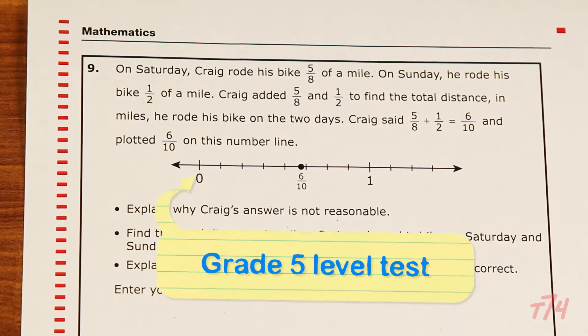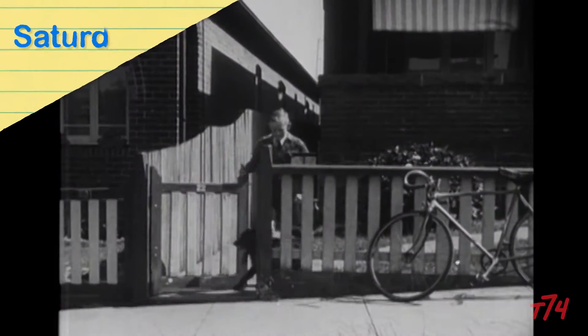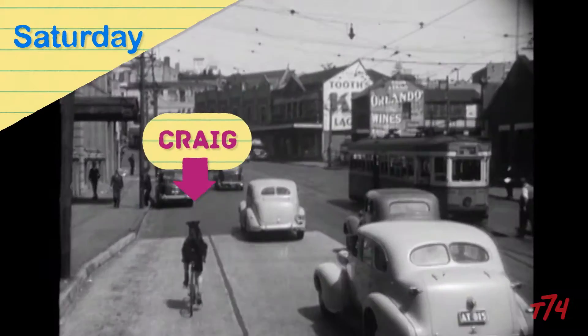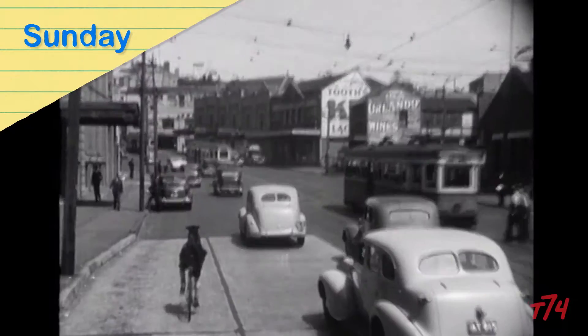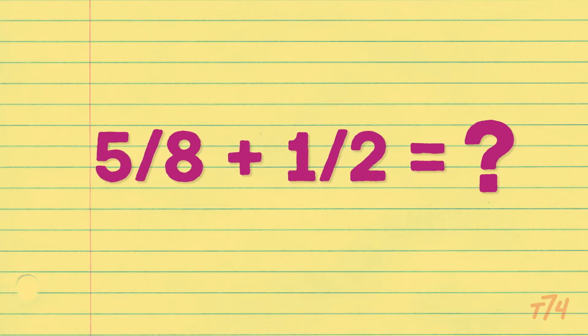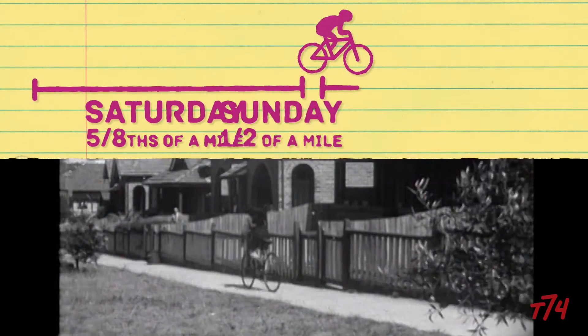Here's the problem, which comes from a grade 5 level test. On Saturday, Craig rode his bike 5/8 of a mile. On Sunday, he rode his bike 1/2 of a mile. Craig added 5/8 and 1/2 to find the total distance in miles he rode his bike on the two days.